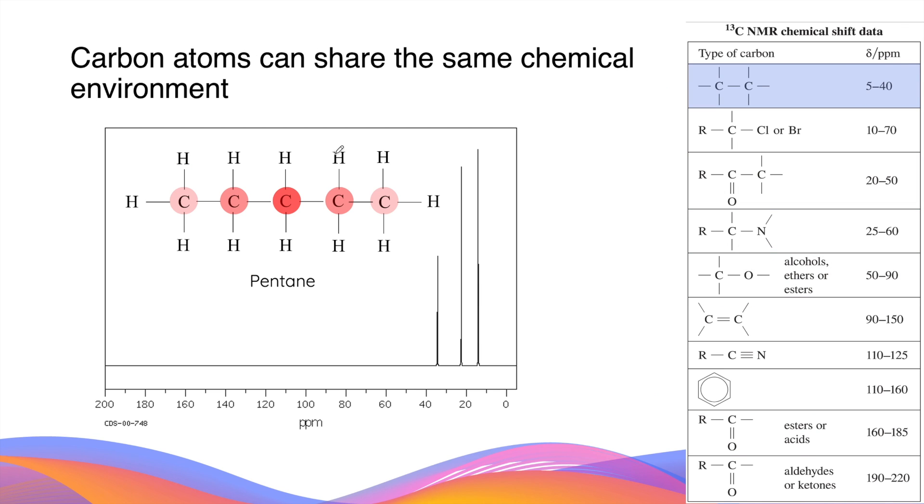Carbon atoms can share the same chemical environment. In the molecule of pentane, despite the fact that there are five carbon atoms in the molecule, there are only three chemical environments. This is because the middle carbon has its own chemical environment, while the two adjacent carbon atoms are in the same chemical environments.